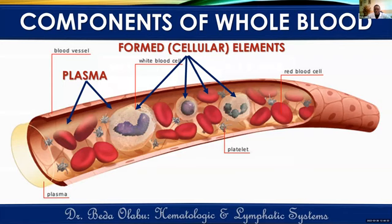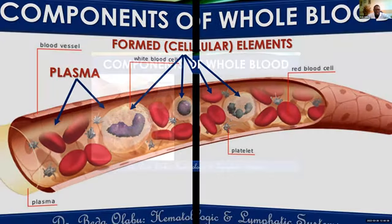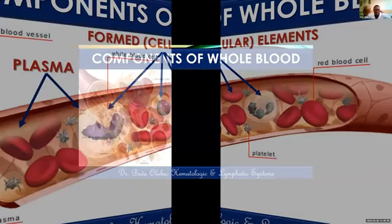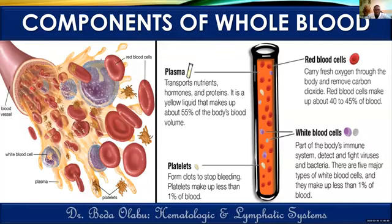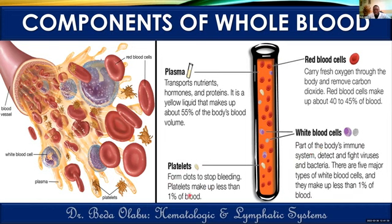In this image we see several formed elements as well as the fluid component. The cellular component includes red blood cells, white blood cells, and platelets. Red blood cells are responsible for transport of gases; white blood cells are important for fighting infections; and platelets are important in blood clotting. Those are the formed elements of blood.